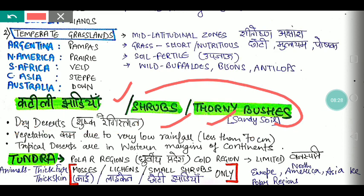Next is tropical desert vegetation. Tropical deserts, like the shrub areas, are found on the western margins of continents. After that is Tundra, which I have mentioned earlier. Tundra is found in cold polar regions — at the very top, in polar areas — which are extremely cold.